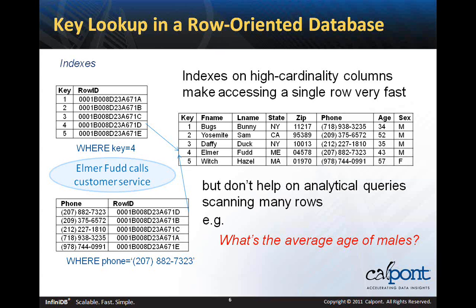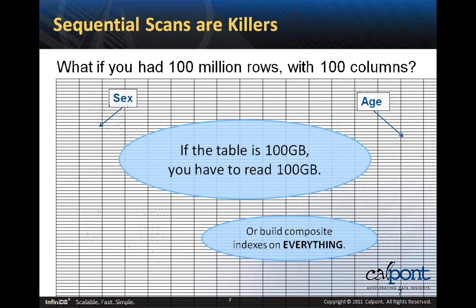However, indexes are usually not helpful in analytical queries which scan many rows. For example, if you want to answer the question, what is the average age of our male customers? Even if you have an index, it won't be used when the query will return about 50% of the rows, or generally speaking, any time your query will return more than 10% of the data. Usually a query of this type will result in a sequential scan, which is a performance killer. Imagine if you had hundreds of millions of rows and hundreds of columns — if your table is 100 gigabytes, you're going to end up reading the entire 100 gigabytes. Your only other option is to build a composite index on age and sex so you can do an index scan. But in an analytical environment, you can't usually predict every combination of attributes and filters you're going to want to query, so you would have to build huge composite indexes on everything.